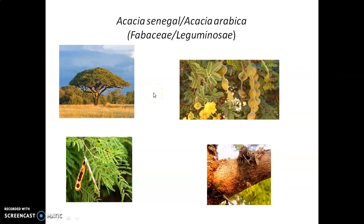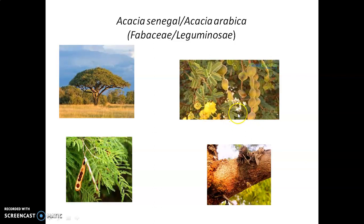Acacia, or gum Acacia, or Indian gum, or gum Arabica, is actually a gum obtained from two different plants. One is from Acacia senegal — here you can see the picture — and another is Acacia arabica. This shows two portions of Acacia senegal and a branch of Acacia arabica.